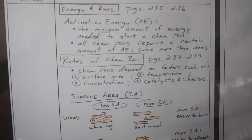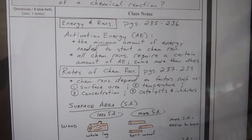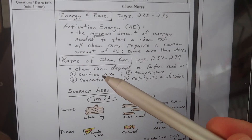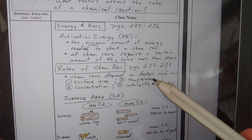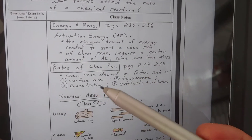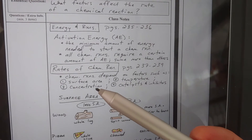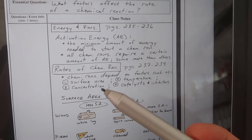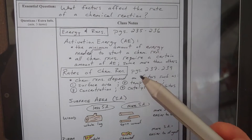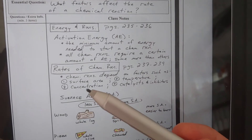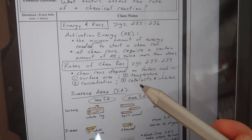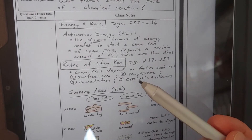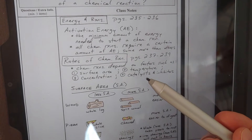Now, the rates of chemical reactions — how can you speed up a chemical reaction? It depends on four major factors: surface area, temperature, concentration, and catalysts and inhibitors. For example, hydrochloric acid is a very strong acid that could burn through metal, but when diluted with a lot of water, it won't do anything. And there's also a catalyst literally in your car called a catalytic converter — the most famous catalyst of all.